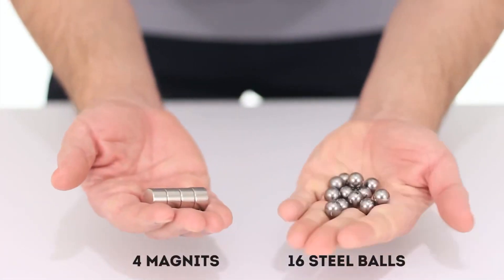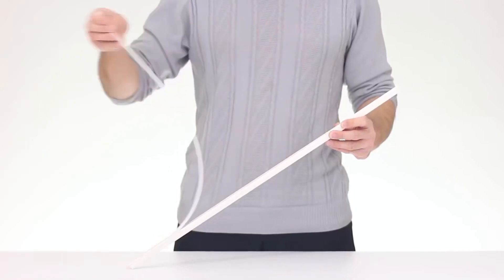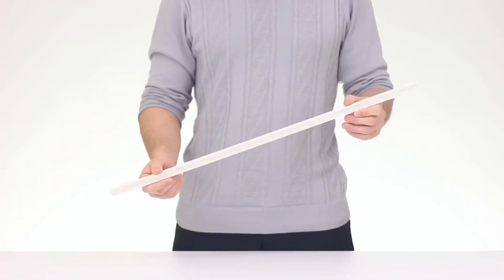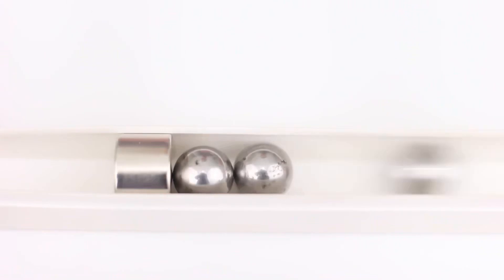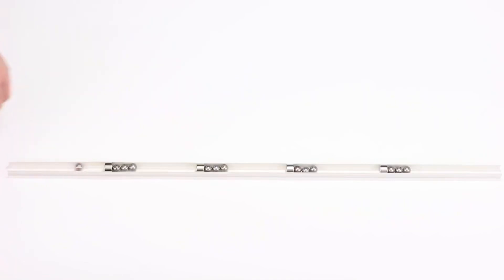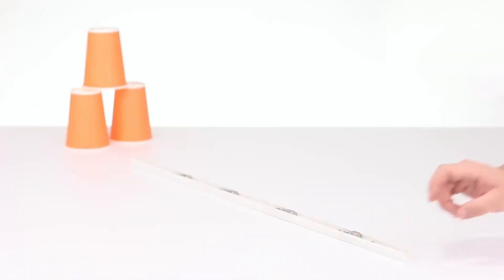Let's take four magnets and 16 steel balls. Now we'll open up the plastic baseboard and place them inside as follows. Push a lonely ball to the nearest magnet and bam, all the balls have changed their position and the extreme one flew out the baseboard at a decent speed. This is a real magnetic rifle.